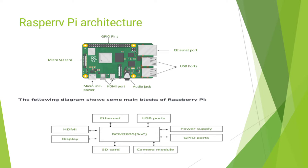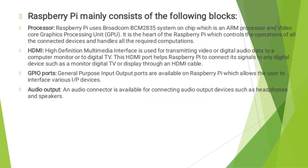The parts include micro SD card, micro USB power, HDMI port, audio jack, USB port, and Ethernet port. The second diagram shows the main blocks of Raspberry Pi: Ethernet, USB port, power supply, GPIO port, SD card, camera module, HDMI, and display.